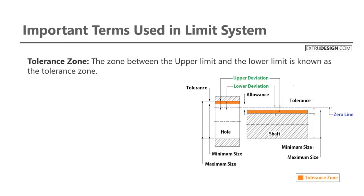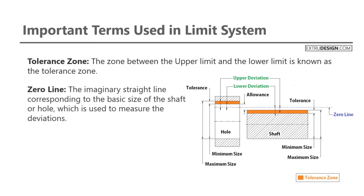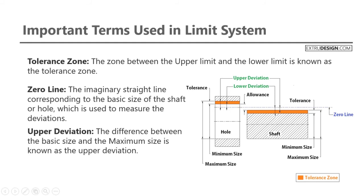The next term is tolerance zone. The zone between the upper limit and the lower limit is known as the tolerance zone. You can see the tolerance zone for the shaft and the tolerance zone for the hole. Zero line is the imaginary straight line corresponding to the basic size of the shaft or hole, which is used to measure the deviations. You can see the zero line in the diagram.